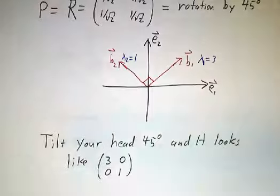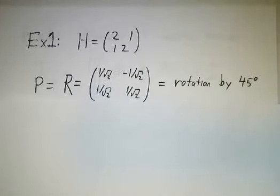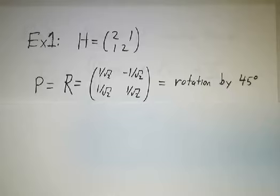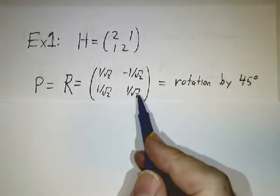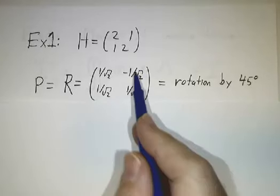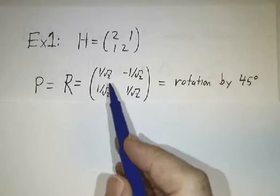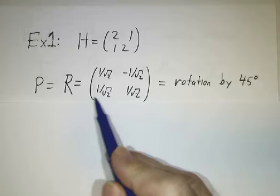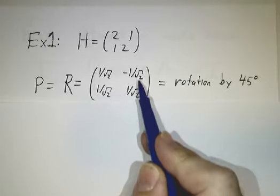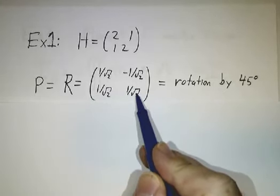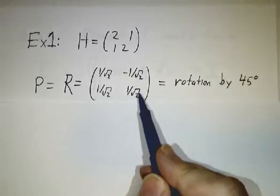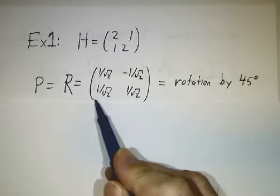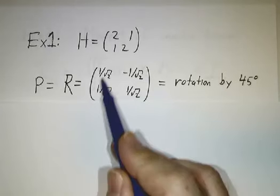So for example, we have our favorite matrix 2, 1, 1, 2. Now, we usually call the eigenvectors of this 1, 1, and minus 1, 1, or actually 1, 1, and 1, minus 1. But we need to rescale these to be unit vectors, so it's 1 over root 2. And if you have 1 over root 2 minus 1 over root 2, you'd get a matrix whose determinant is negative. So we'll take minus 1 over root 2, 1 over root 2, and we get a matrix whose determinant is positive.